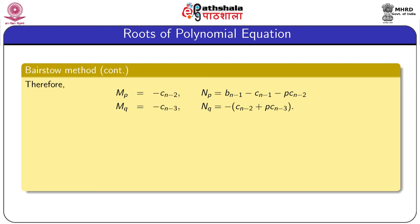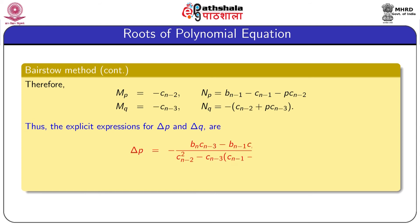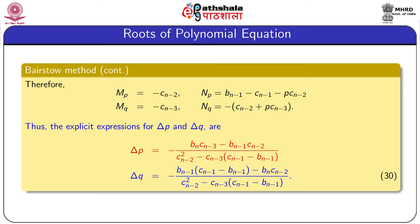The partial derivatives are: ∂m/∂p = −c_(n-2), ∂m/∂q = −c_(n-3), ∂n/∂p = b_(n-1) − c_(n-1) − p·c_(n-2), and ∂n/∂q = −c_(n-2) + p·c_(n-3). Using this notation, the expressions for δp and δq are determined. This is the final expression to find δp and δq, depending on the values of b's and c's computed previously.